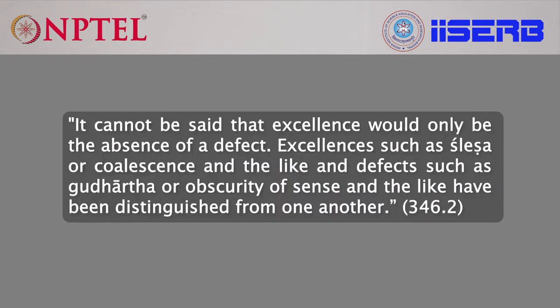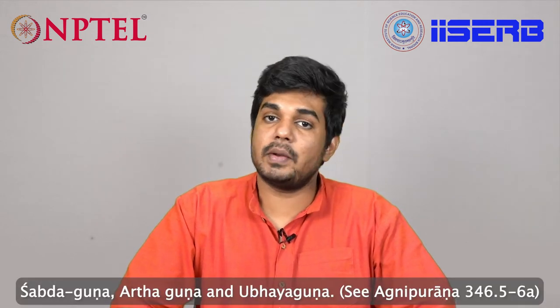The observation of the Agni Purana kara is worth quoting: it cannot be said that excellence would only be the absence of a defect. Excellences such as shlesha or coalescence and the defects such as gudartha or obscurity of sense and the like have been distinguished from one another. The author of Agni Purana classifies the gunas first under two heads, namely Samanya gunas and Vaisheshika gunas. The Samanya is further classified into three categories: Shabda guna, Artha guna, and Upaya guna.